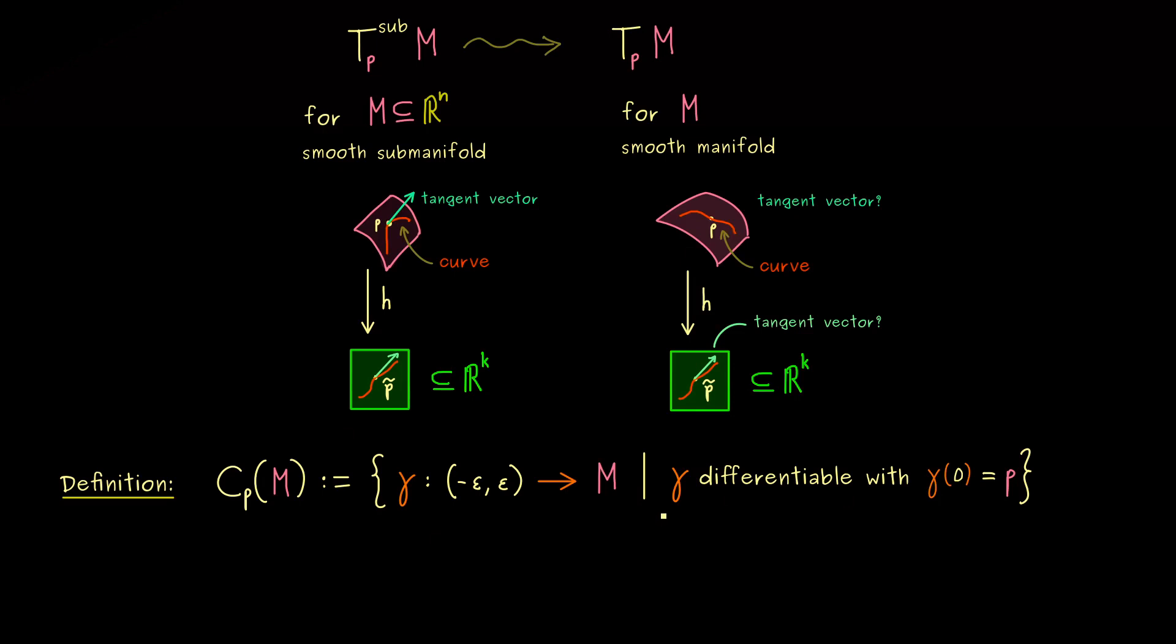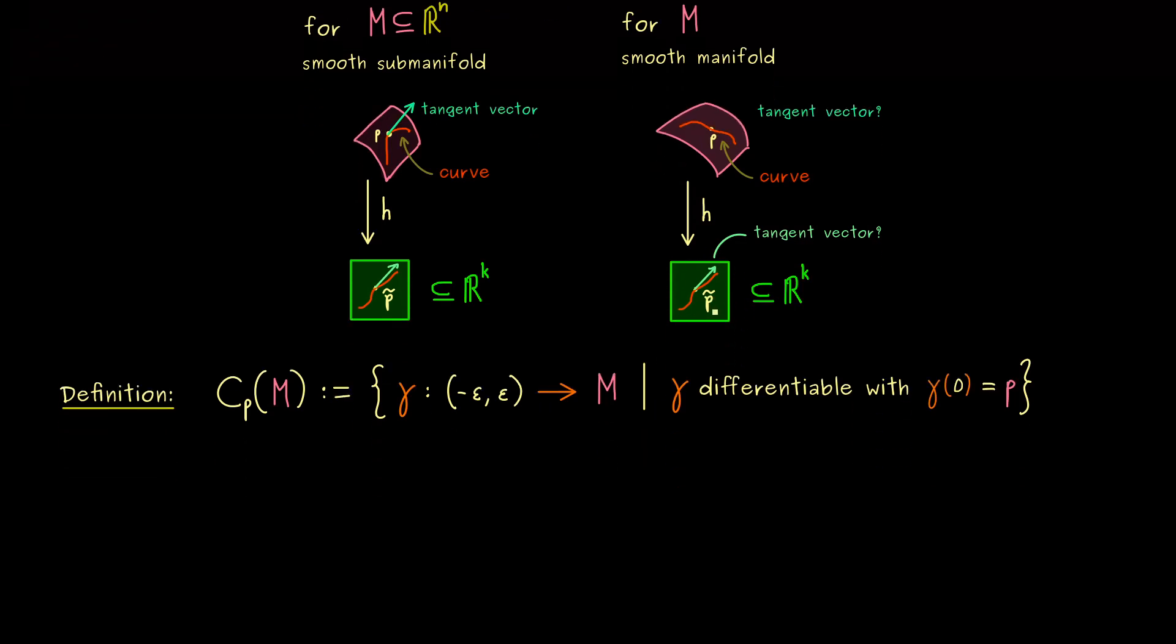Okay, and now you know, for such a curve gamma, we can also define the curve here on the lower level. And of course, this will be simply the composition h after gamma. Okay, so here please don't forget, this differentiable for gamma means that we have a differentiability between manifolds.